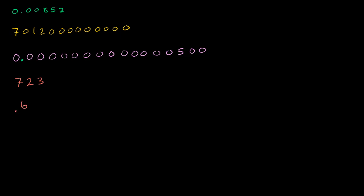Let's do 0.6. And then let's do one more just to make sure we've covered all of our bases — let's say we do 823 and then throw an arbitrary number of zeros there.